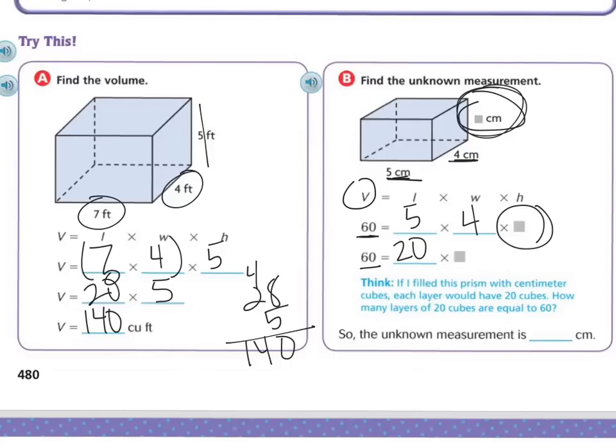So now, in order to find out what this is, I've got that missing number. Well, what times 20 equals 60? 20, 40, 60. Well, 3. So the unknown measurement is 3 centimeters. You just kind of have to work backwards on that problem.